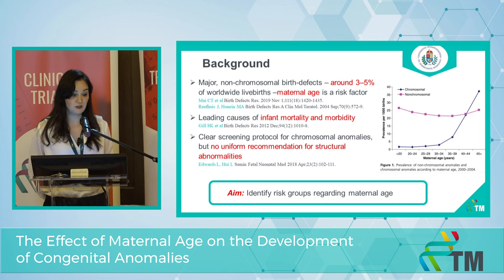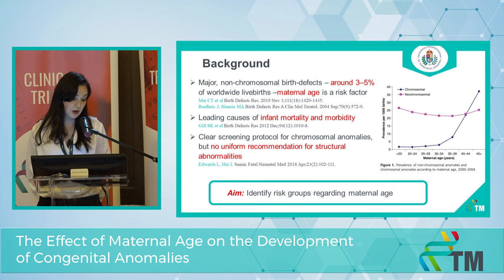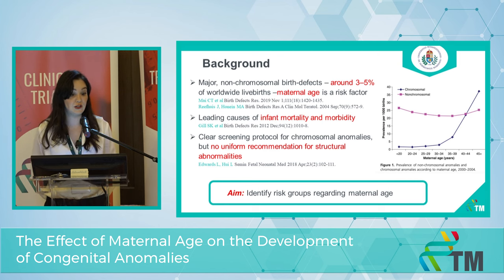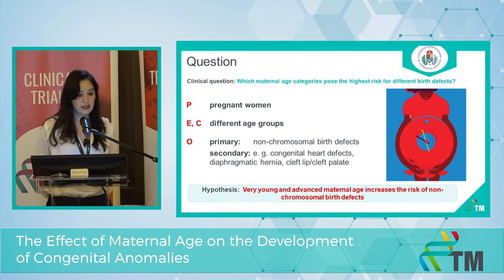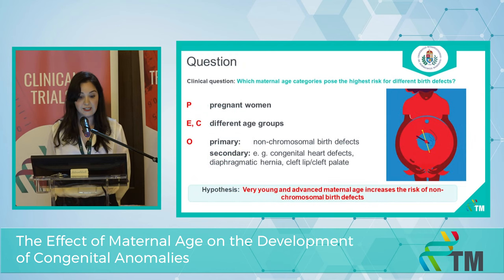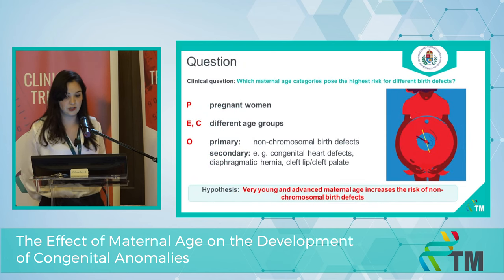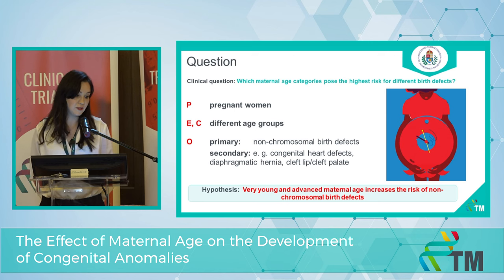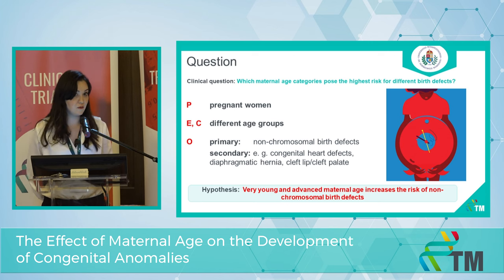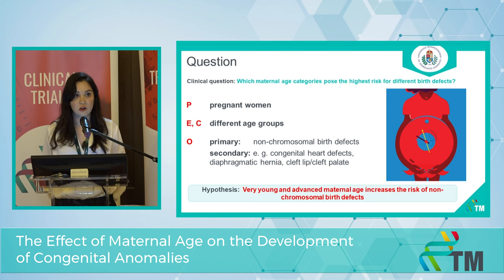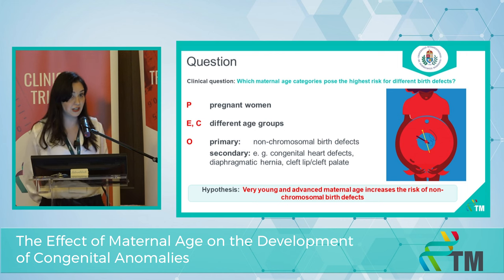Because of this, there is no uniform recommendation for non-chromosomal abnormalities. Our aim is to identify risk groups regarding maternal age. Our clinical question is: which maternal age categories pose the highest risk for different birth defects? Our study population is pregnant women, covering all pregnancy outcomes including stillbirth, livebirth, and miscarriages.